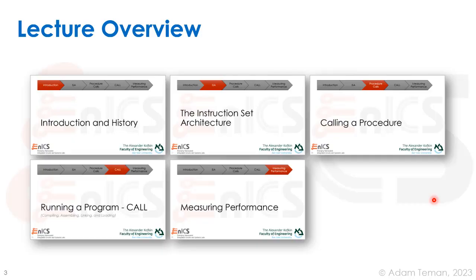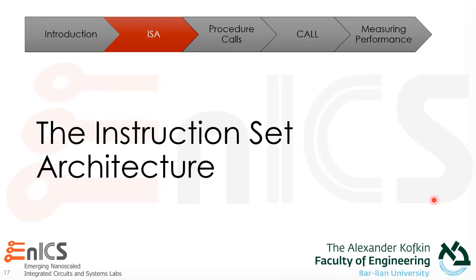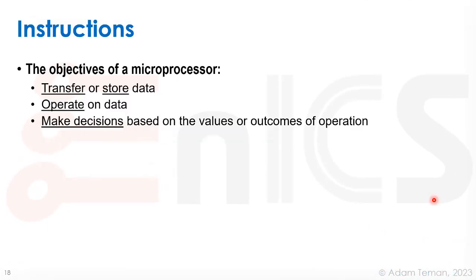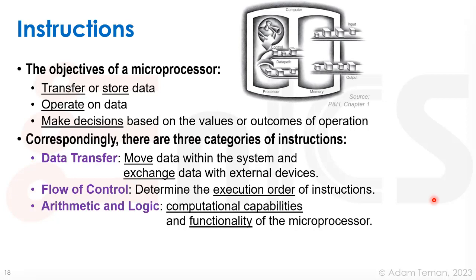Following our brief introduction and history, we can go over to what is known as the instruction set architecture. The objectives of a microprocessor are: first, to transfer and store data; second, to operate on that data; and finally, to make decisions based on the values or outcomes of an operation. Correspondingly, there are three categories of instructions: data transfer instructions, flow of control instructions, and arithmetic and logic operations.